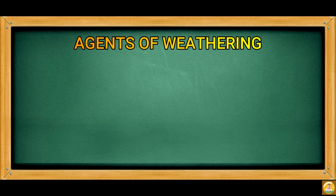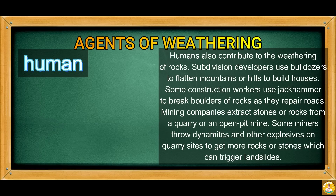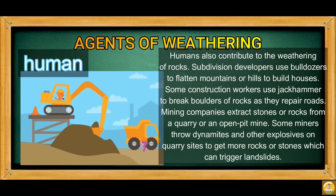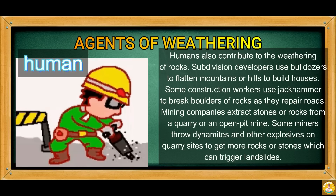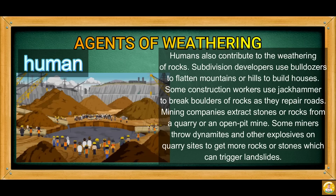The last agent of weathering is humans. Humans also contribute to the weathering of rocks. Some developers use bulldozers to flatten mountains or hills to build houses. Some construction workers use jackhammers to break boulders of rocks as they repair roads. Mining companies extract stones or rocks from a quarry or an open pit mine. Some miners throw dynamites and other explosives on quarry sites to get more rocks or stones, which can trigger landslides.